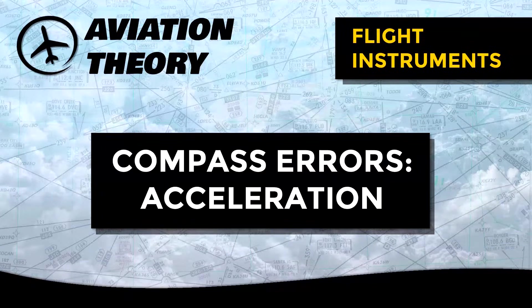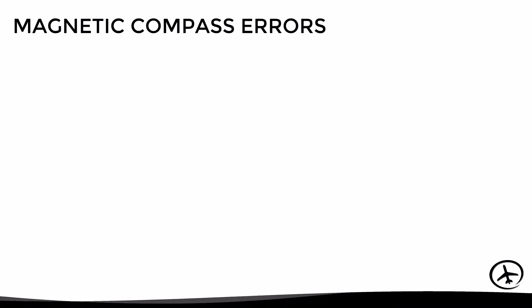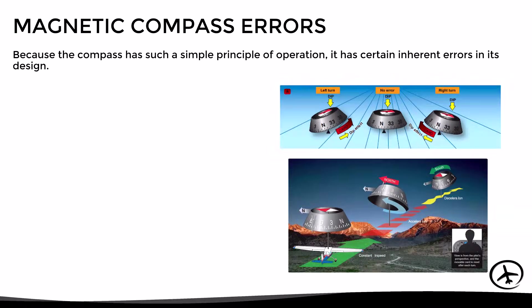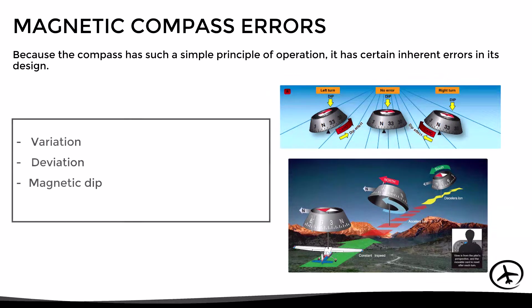Today we will talk about the magnetic compass errors caused by acceleration. As mentioned in previous videos, the magnetic compass is basically a magnet that is free to rotate about a pivot point. Since it has such a simple design, it has certain inherent errors that pilots should be aware of. These errors are magnetic variation, compass deviation, and magnetic dip, which can be divided into acceleration error and turning error.